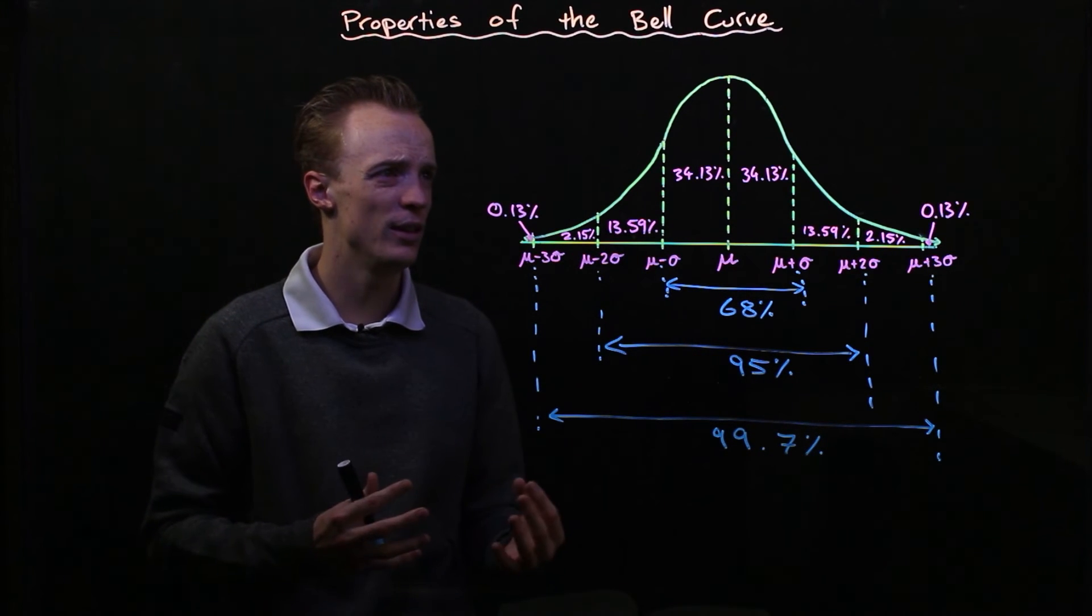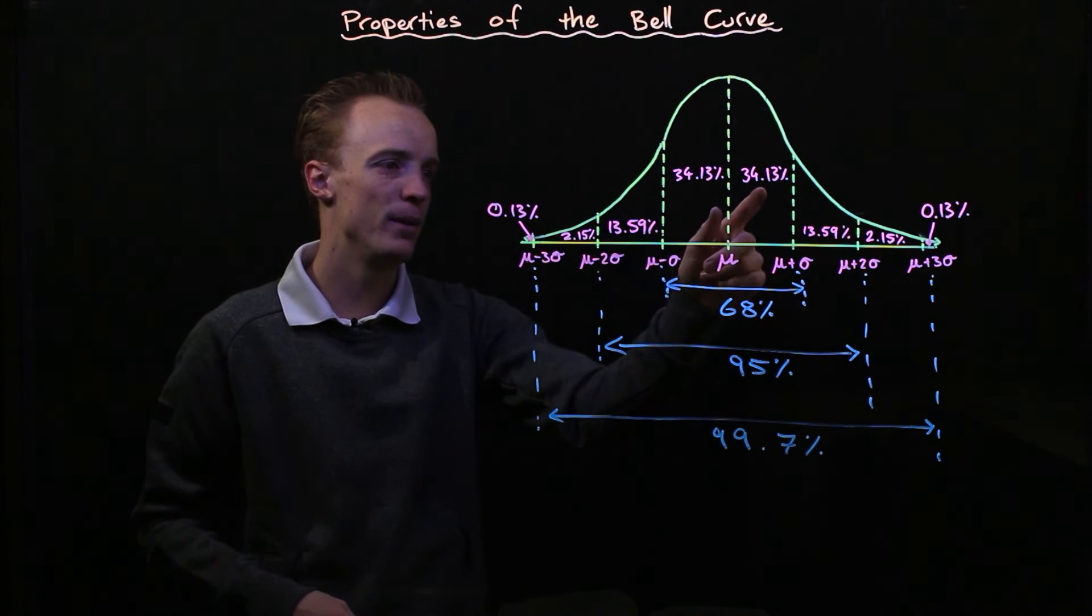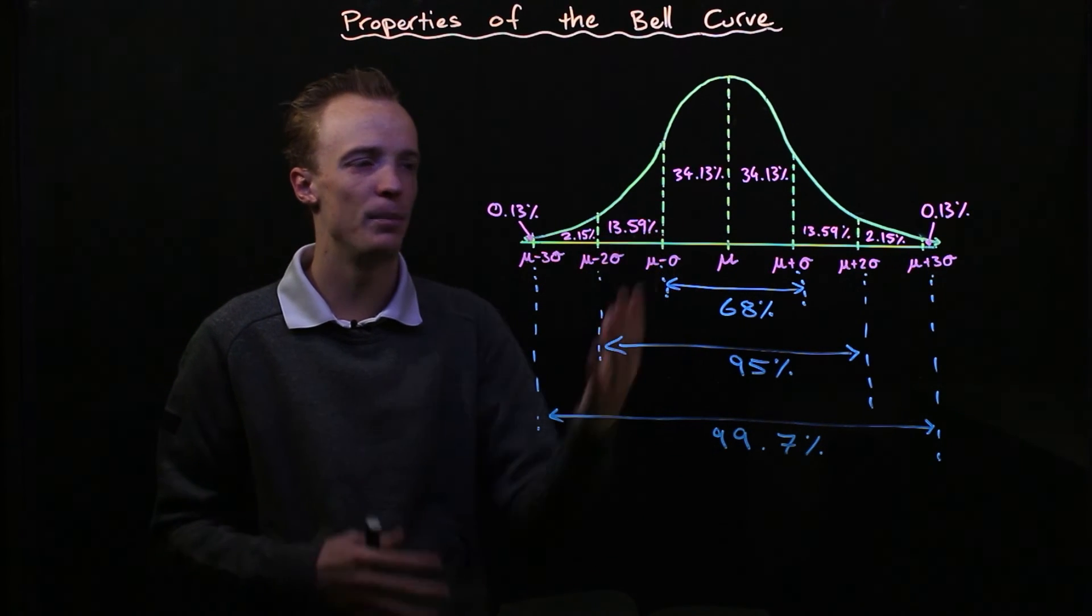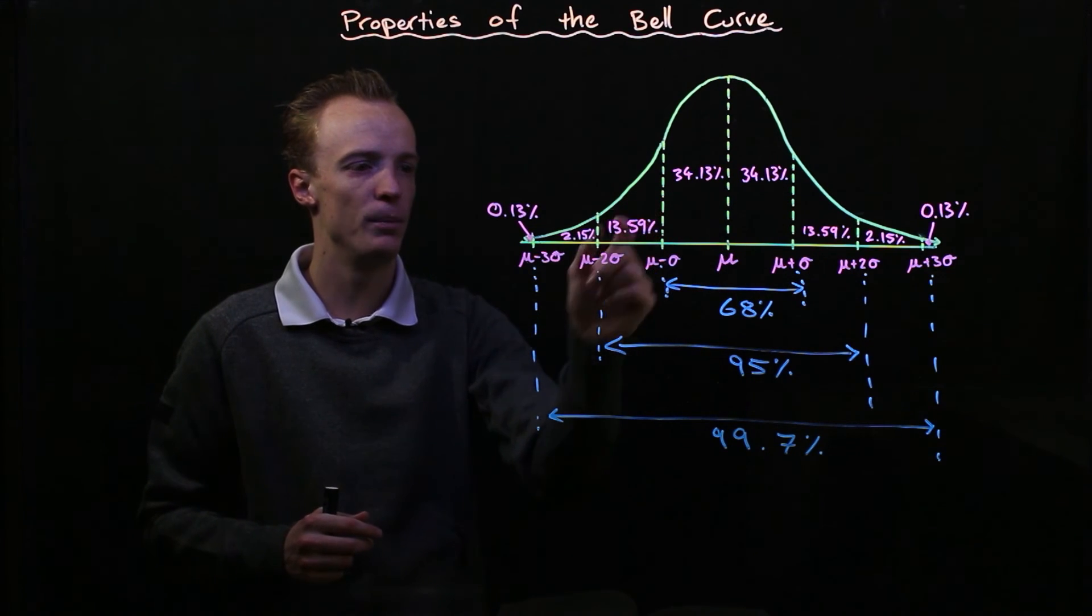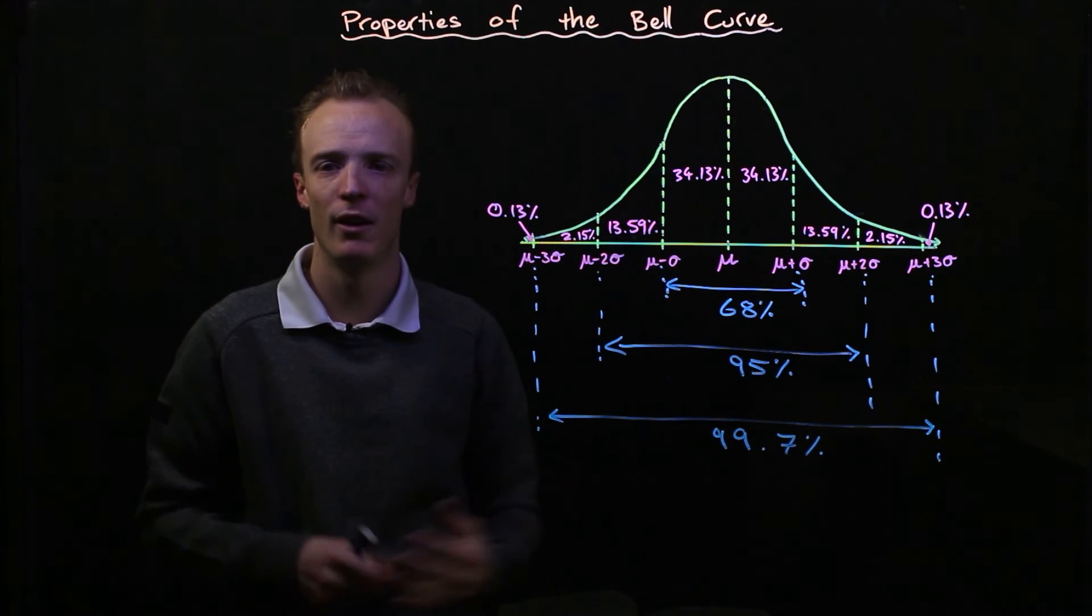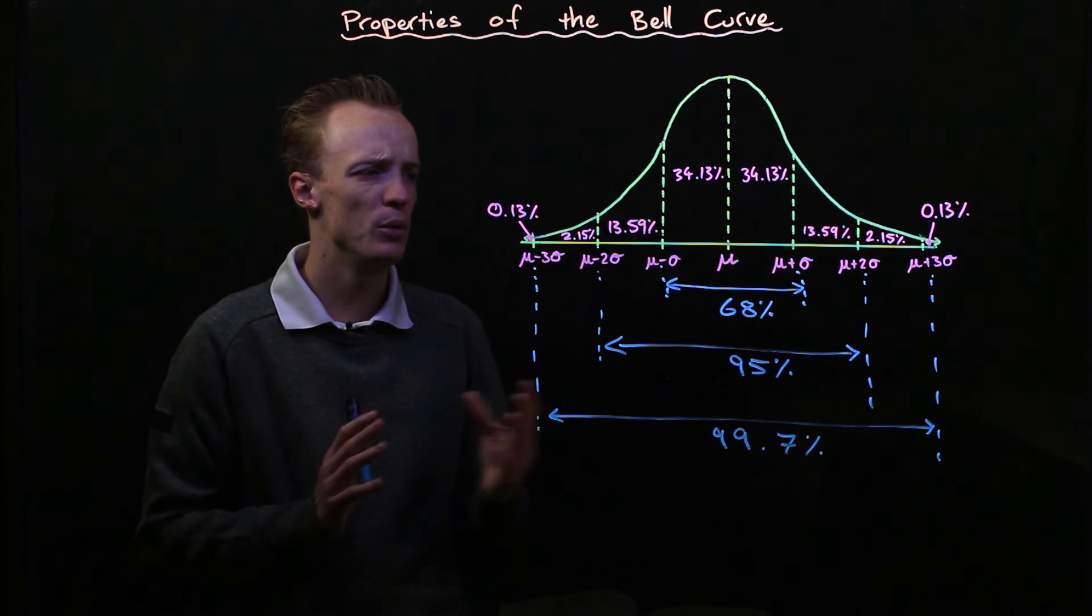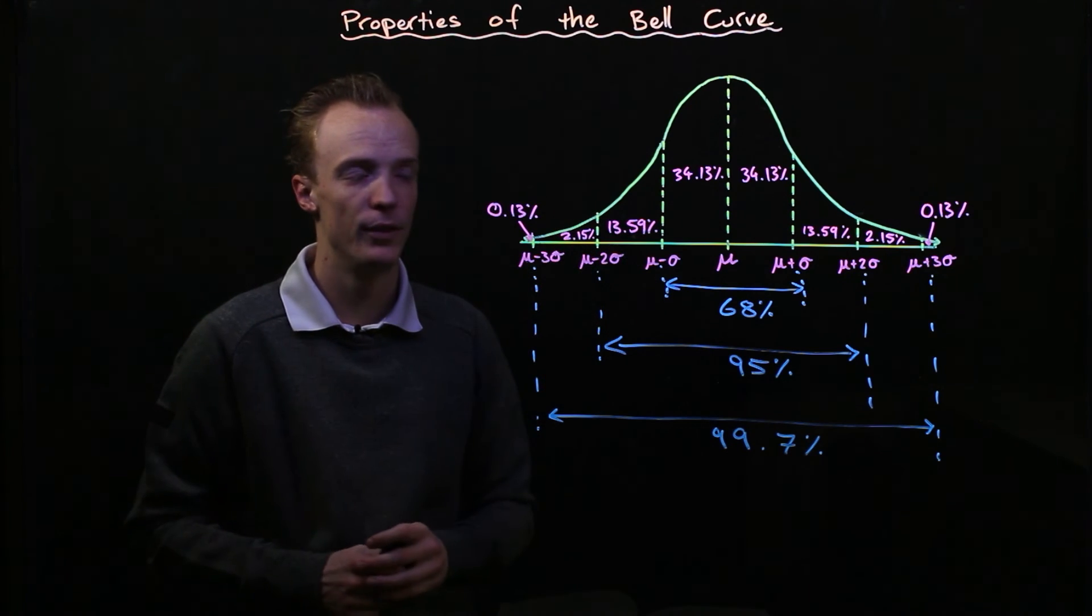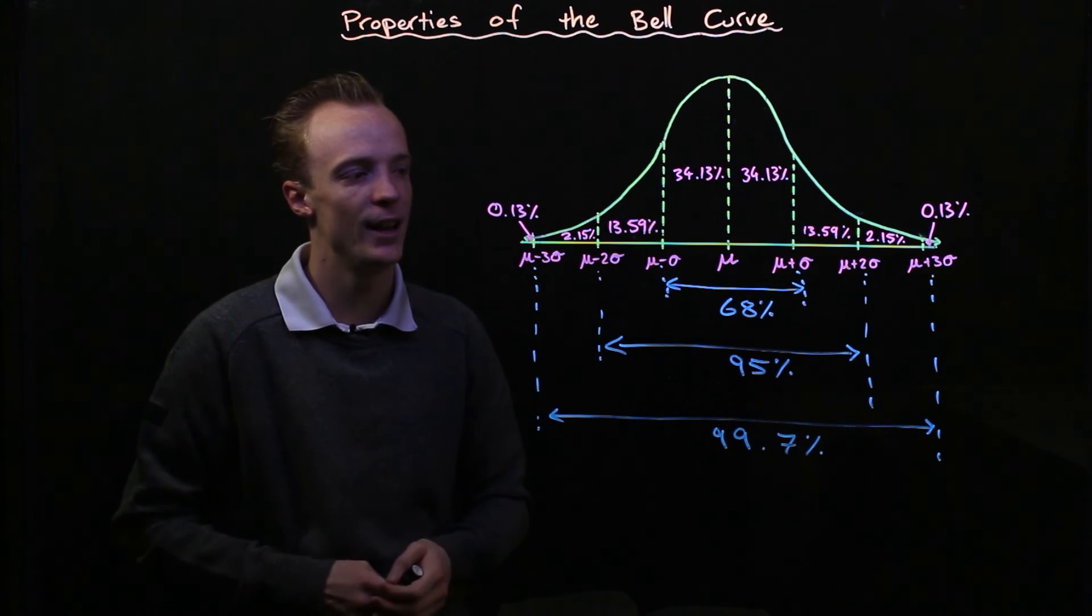Now due to the symmetrical properties of a bell curve, you can actually break this up and start looking in a little bit more detail about the individual percentages on different sections of the bell curve, as I've indicated on the graph here. I'm not going to go into detail about them—you can read these for yourself—but it's important to understand about the bell curve that the majority of the data falls within three standard deviations.